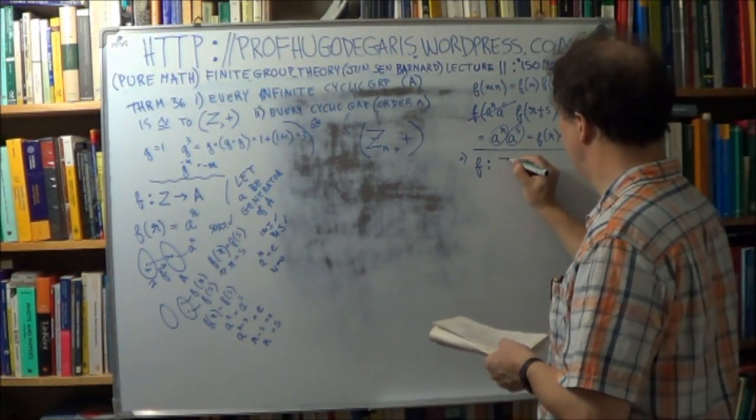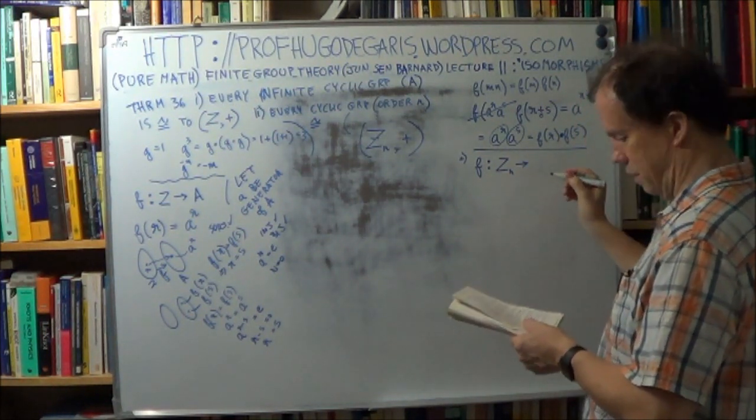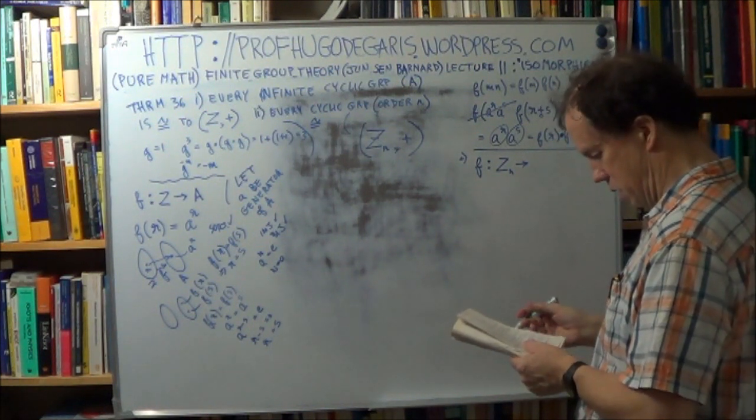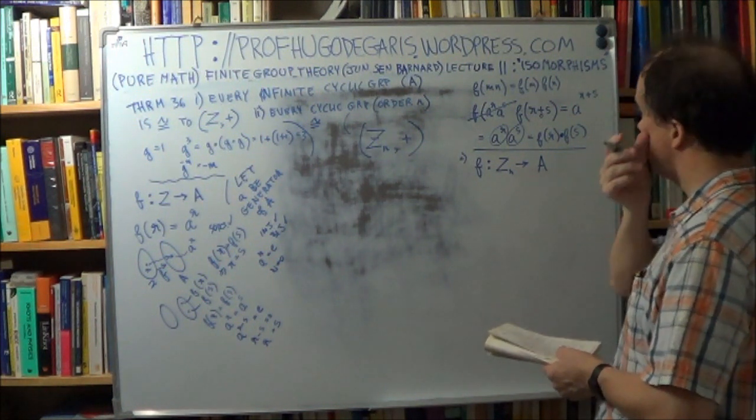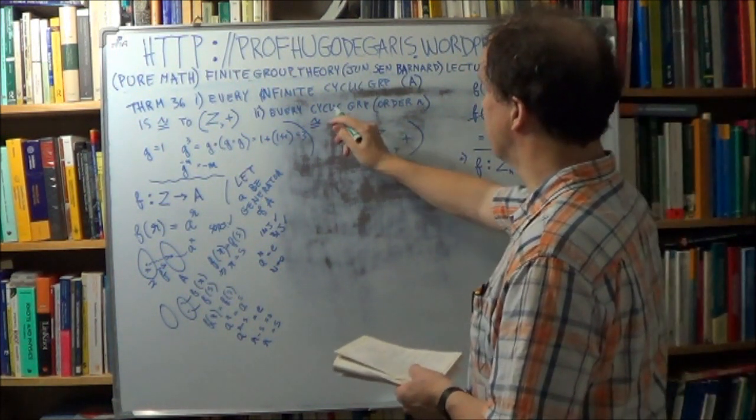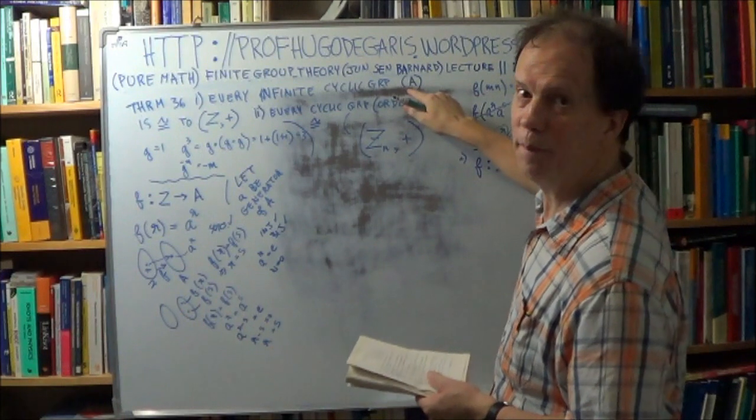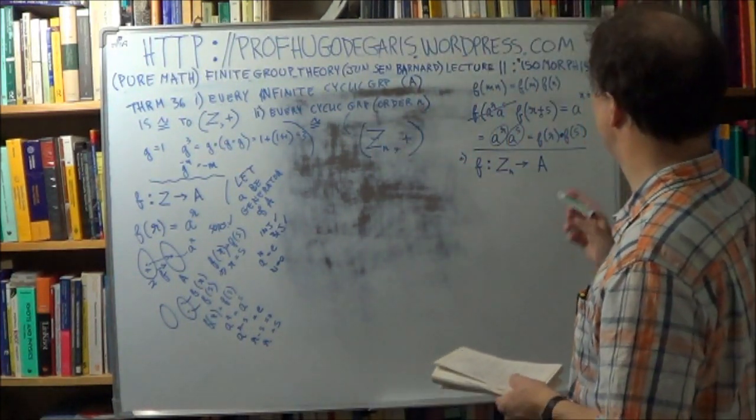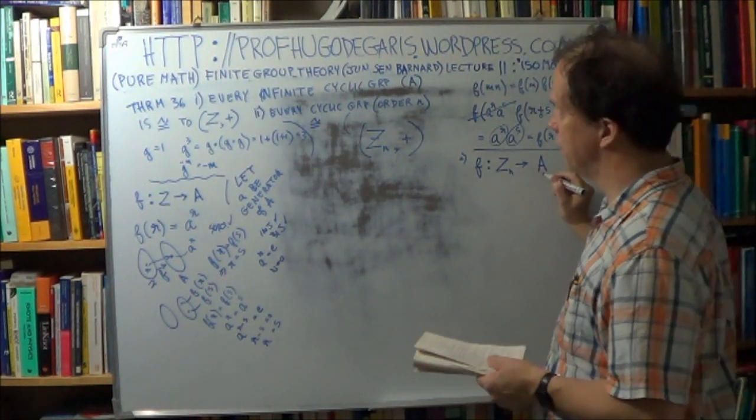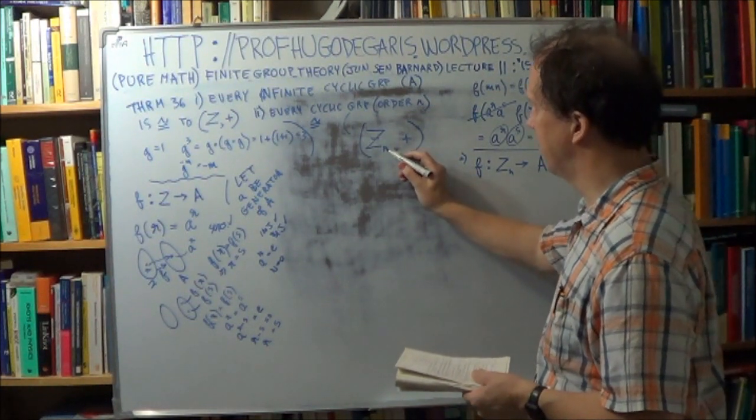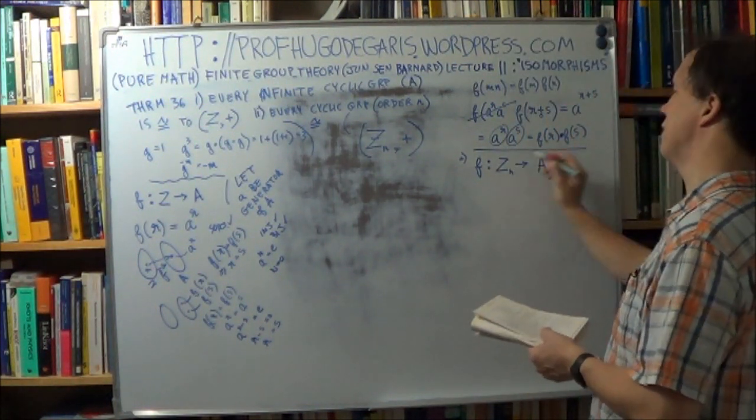So he's going to map this into, what's he going to call it, he still calls it A, right, so A is the cyclic group of order N, right, this A here is not this A, right, this A now, it's the order of this group, it's a cyclic group, is now N, right, order N, and we have, so, well, that's his proposal.